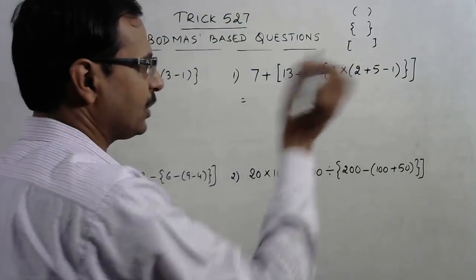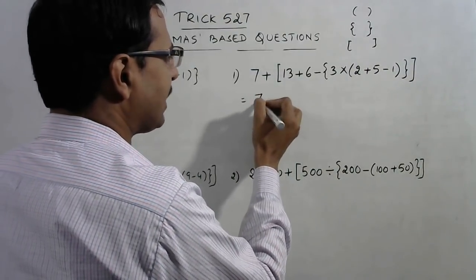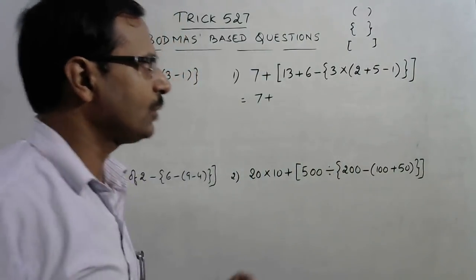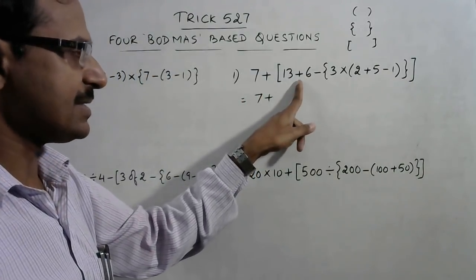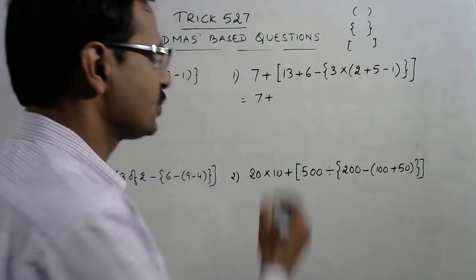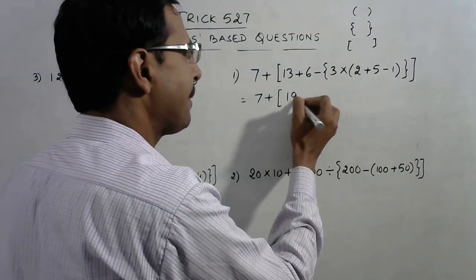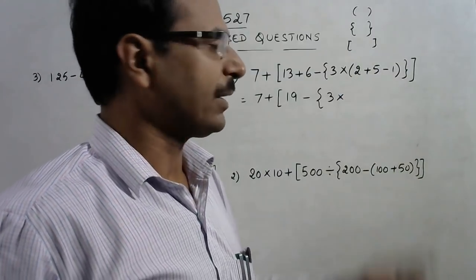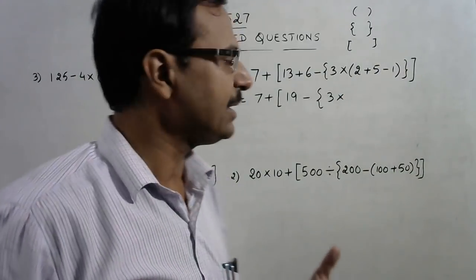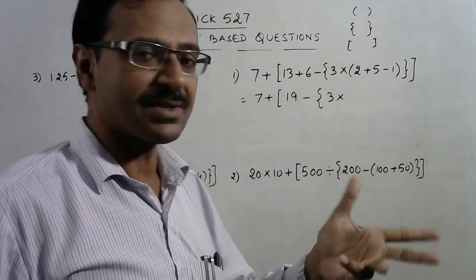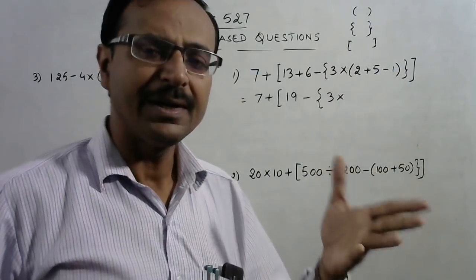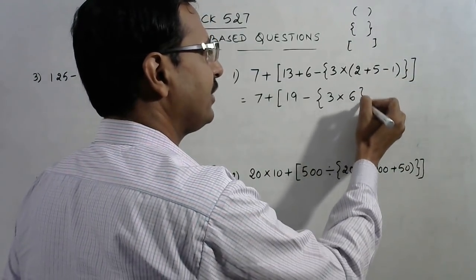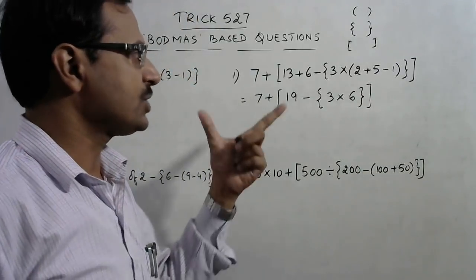For this expression, the 7 plus will come at the end. Since 13 plus 6 has nothing to do with any other operation, I can write it directly as 19. Then, inside the bracket, add and subtract can be done simultaneously: 2 minus 1 is 1, plus 5 is 6 — or equivalently 2 plus 5 is 7, minus 1 is 6. Either way the result is 6, and one bracket is removed, reducing the question to half.